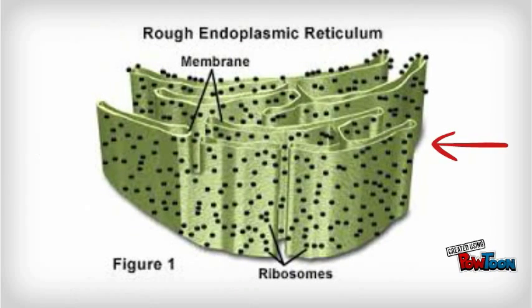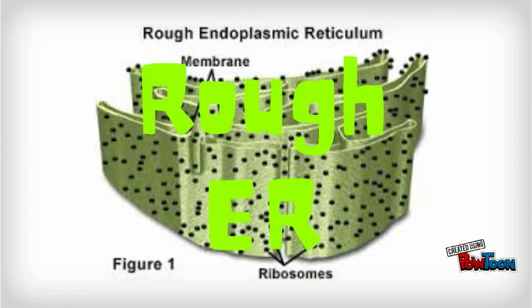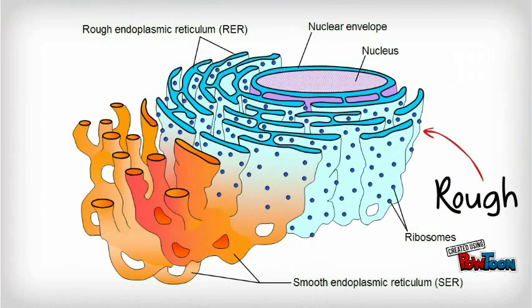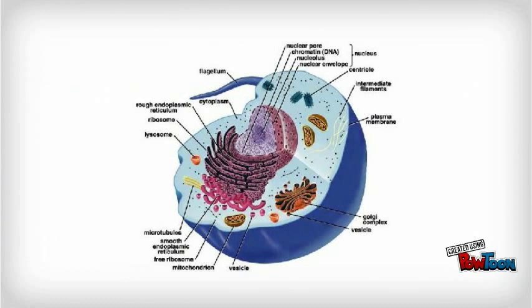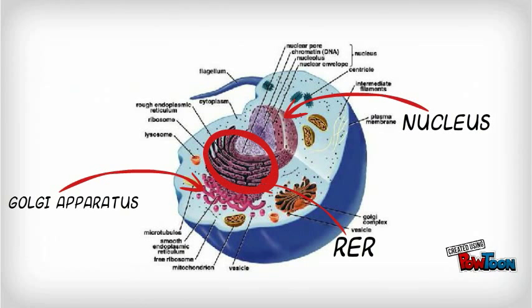This is the rough endoplasmic reticulum, often abbreviated RER or rough ER. It is studded with protein manufacturing ribosomes, giving it a rough appearance, hence its name. Rough ER is found throughout the cell, but the density is highest near the nucleus and Golgi apparatus.